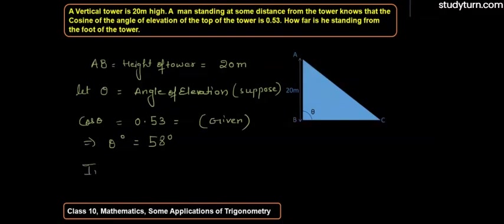In triangle ABC, as shown in the given diagram, it will be AB by BC, that is tan 58 degrees.